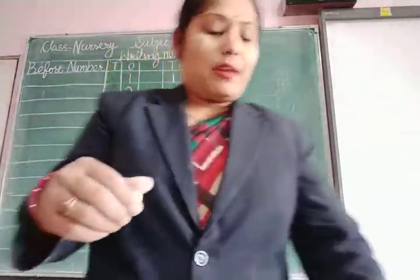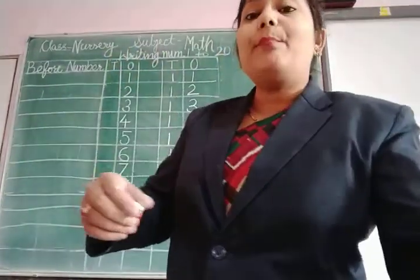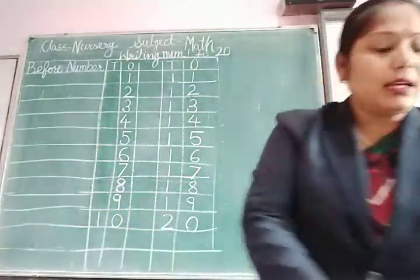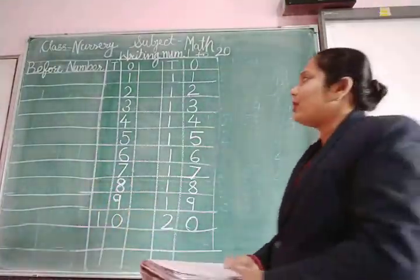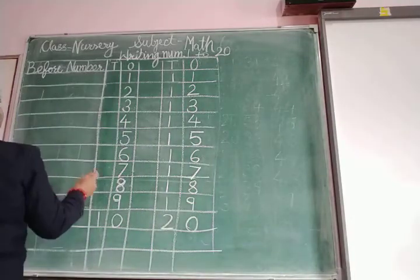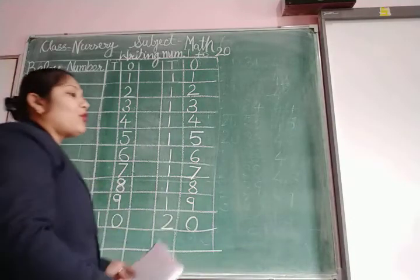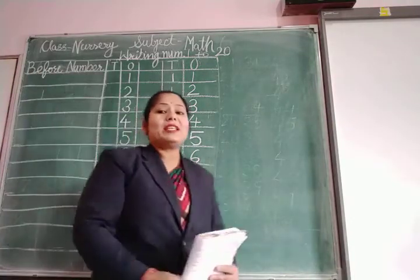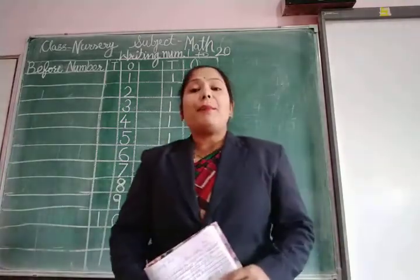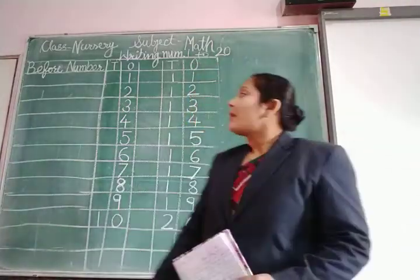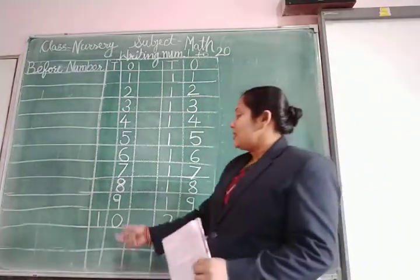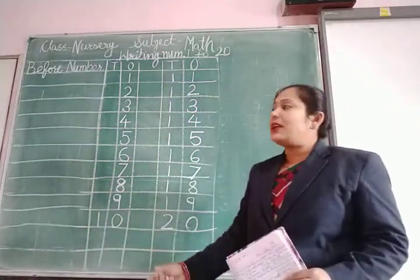We have to write here before number. How can we write here before number? See here. Before — what is the meaning of before? Before means pahle. Before means pahle. So before means pahle. See here, you have to write numbers 1 to 20.